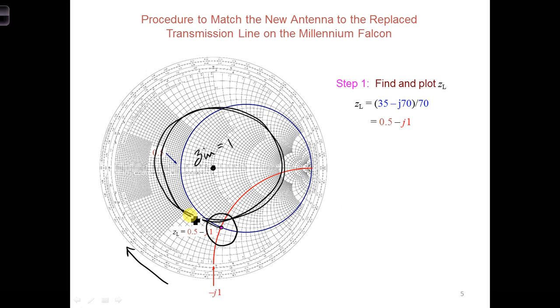Before answering this question, let's remember that for circuit elements in parallel, it's easier to work with admittances Y instead of impedances Z, which is what we've been doing so far, because admittances add when circuit elements are in parallel.